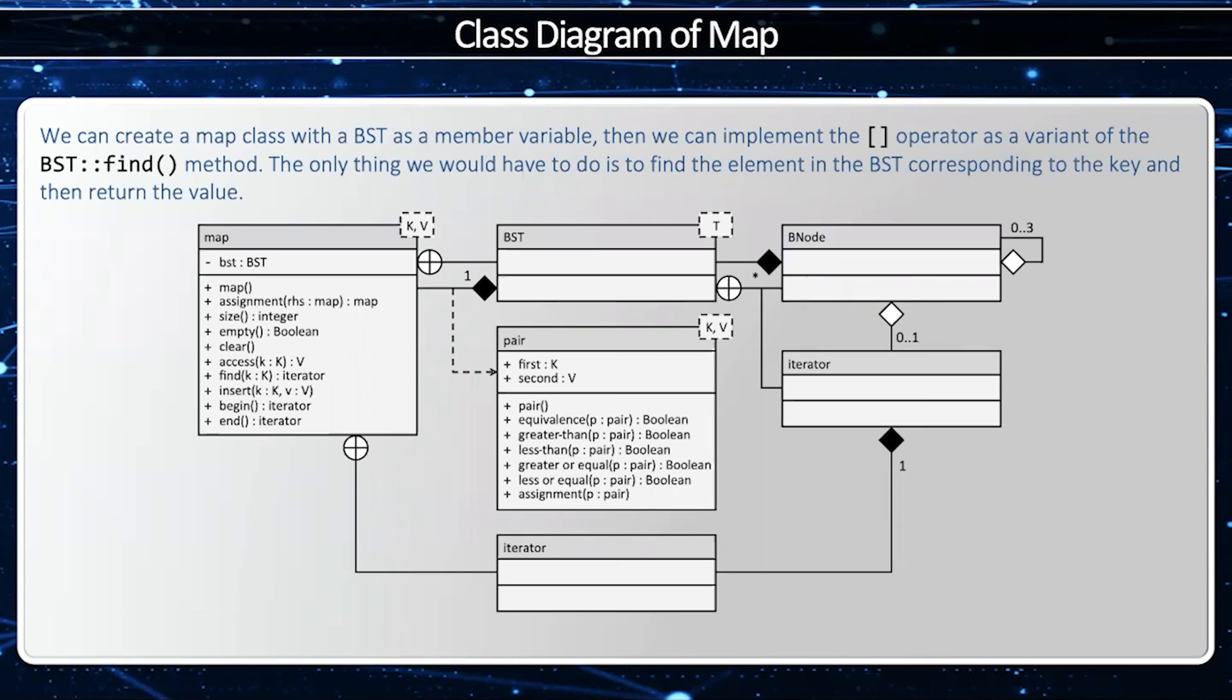The best way to explain how to implement a map is with a UML class diagram. And wow, this is a complicated one. So let's take a look at every element one step at a time.